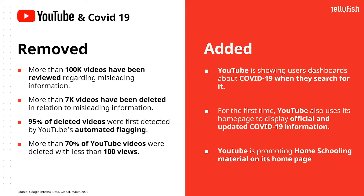Moving specifically to YouTube: YouTube has learned a lot from various scandals in recent years about dealing with misleading content and policing what's on the platform. They've handled COVID really well — more than 100,000 videos have been reviewed regarding misleading information, and 7,000 of those have been deleted. 95% of those videos are being picked up by automated flagging, and 70% are deleted before they even get over 100 views. So Google has been very effective at policing COVID content on YouTube.